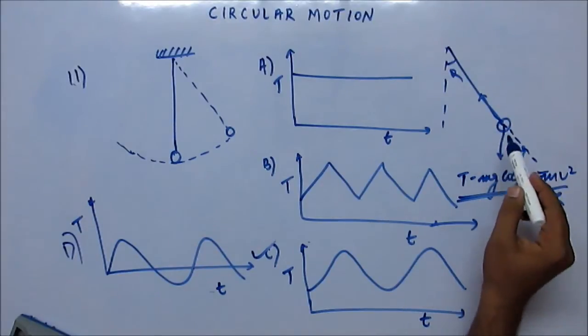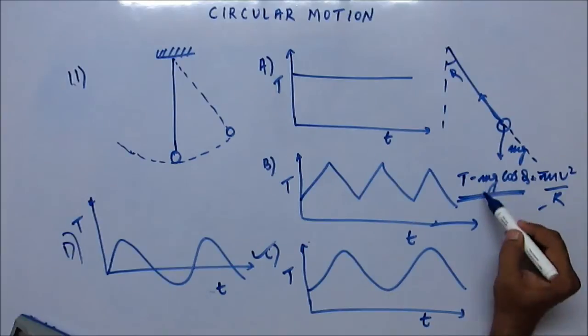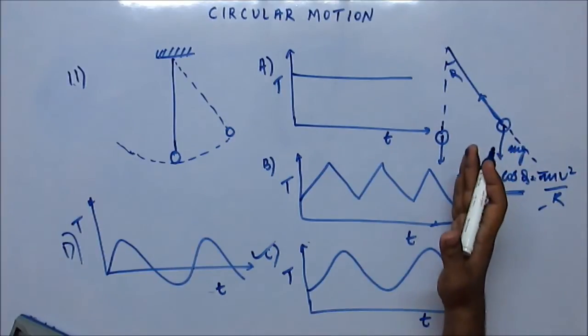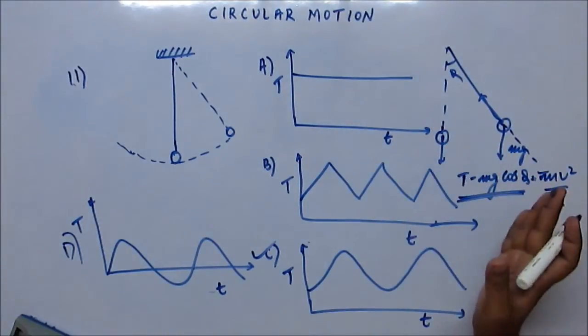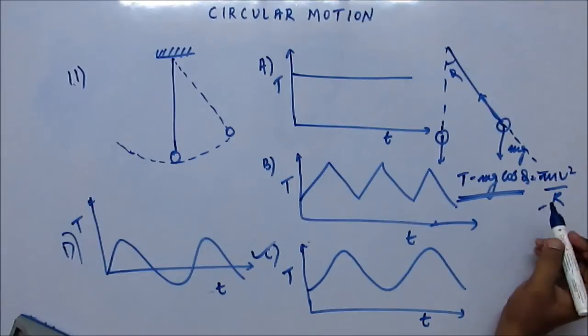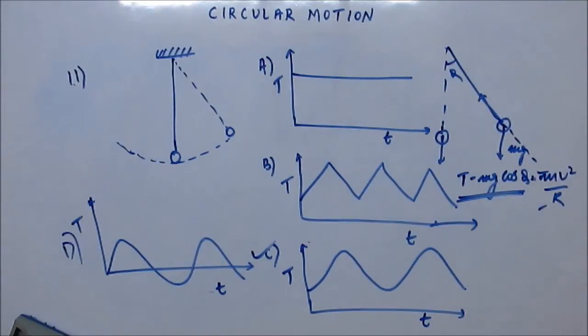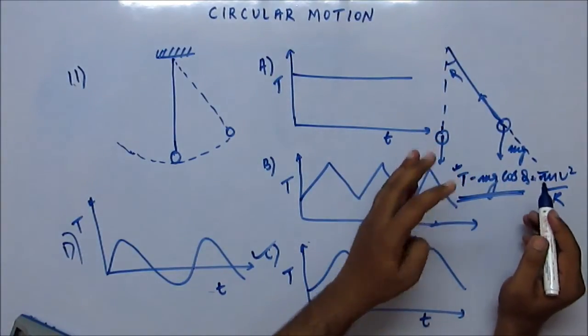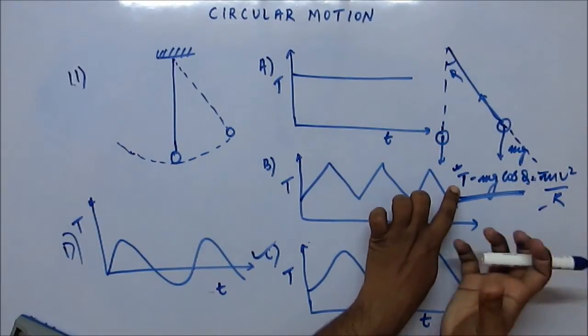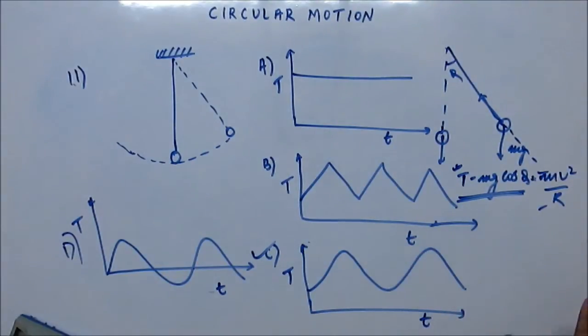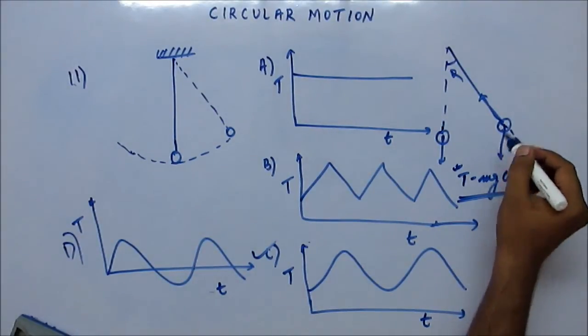Now as the time passes, this component Mg cos theta is going to increase. And when it comes here, the entire portion which is against the tension is Mg. So the force which is against the tension keeps on increasing. This Mg cos theta component keeps on increasing, and right hand side also keeps on increasing. So tension should keep on increasing, and tension should increase at a higher rate.